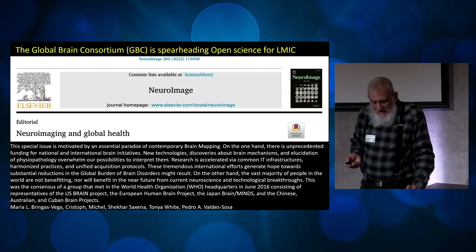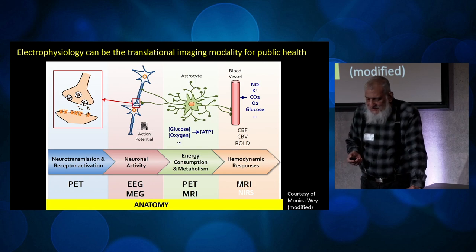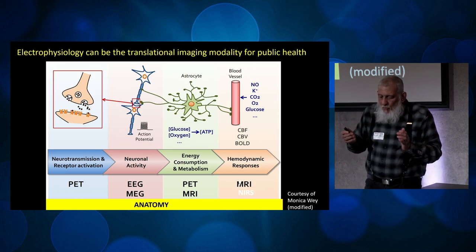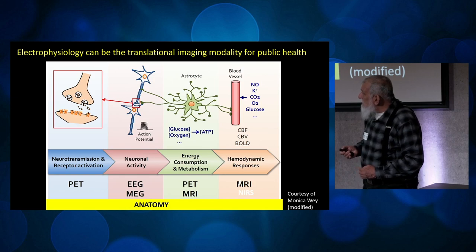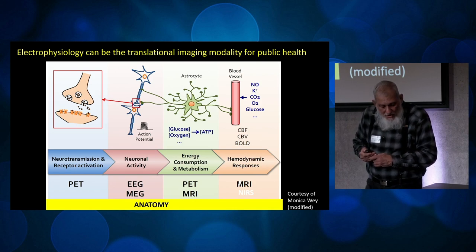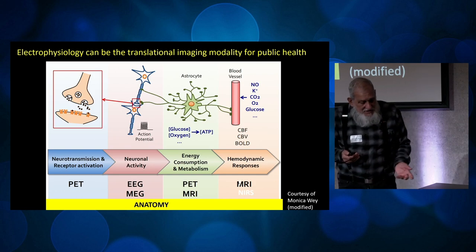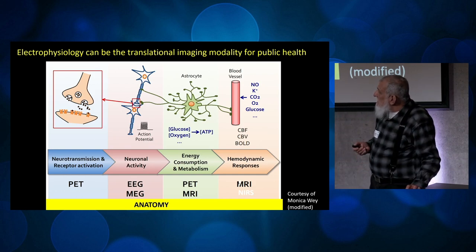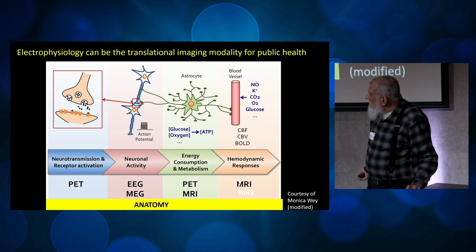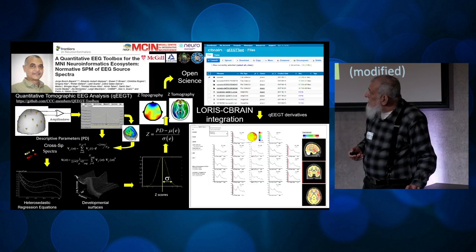One of the things we have been thinking about is that of all the imaging modalities, the one that can serve as a translational bridge is EEG. It has high temporal resolution, low cost, and is easily deployable, as we've been able to demonstrate. That doesn't mean the Global Brain Consortium doesn't study other imaging modalities, but rather that EEG should be a translational bridge.